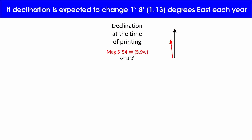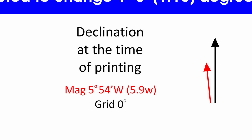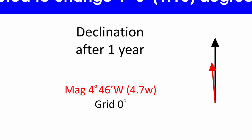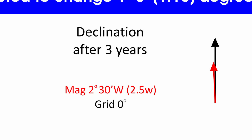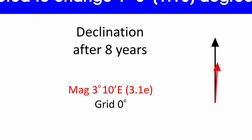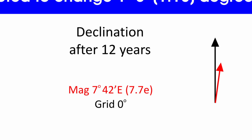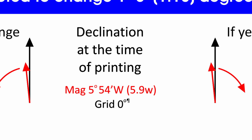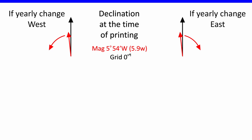Don't forget that declination can be east or west. If the map says your declination is west but the yearly change is going east, you would need to subtract that from the initial declination. If it's east to start with and the yearly change is west, you subtract it. If it's east and the yearly change is also east, you add it. It's just like adding up hours and minutes.